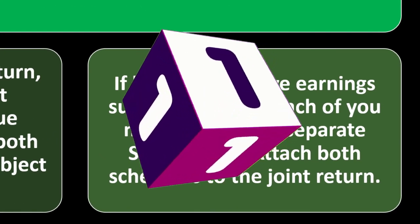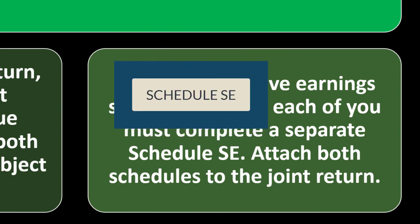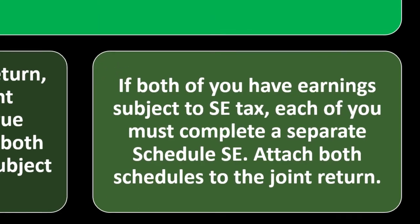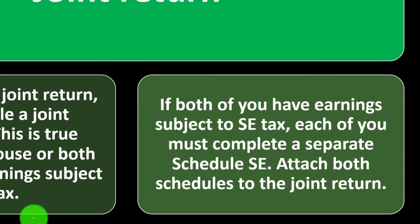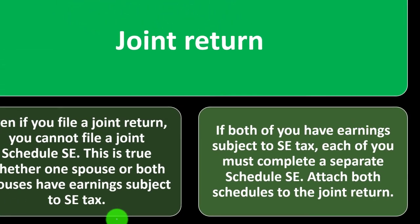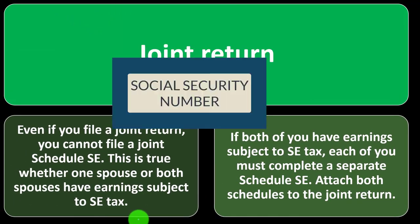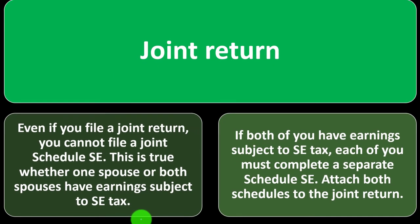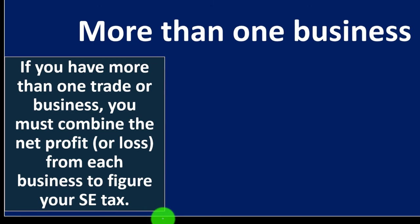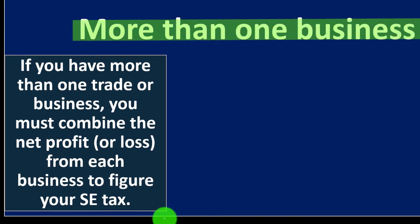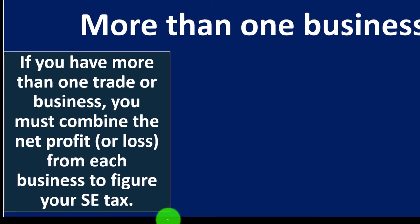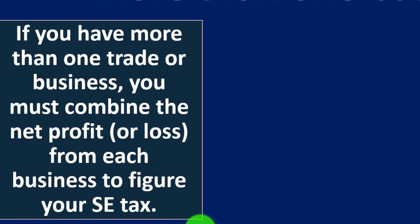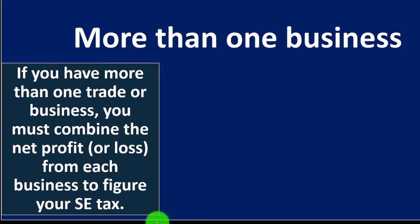You might ask why it matters if you'd pay the same amount of tax on one schedule. It matters because when you receive Social Security benefits, they're based on who put the money in — applied to the Social Security number, not the tax return. So it has to be broken out by individual.